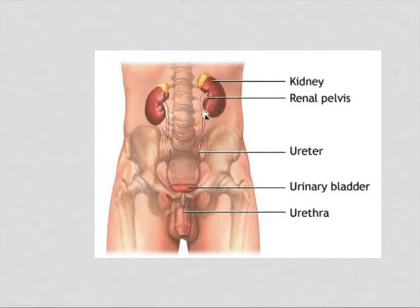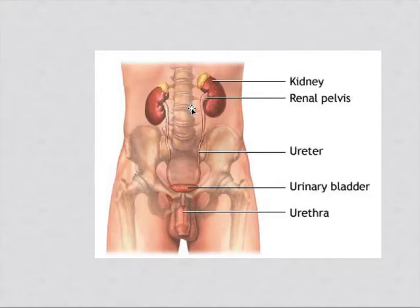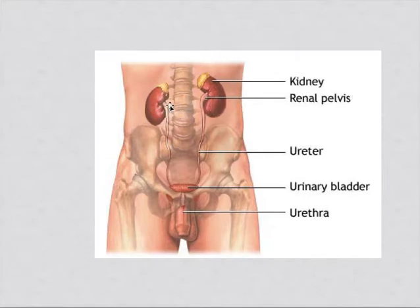The kidneys are two in number, they are retroperitoneal, and covered with the fascia called Gerota's fascia. The left kidney is very closely placed to the spleen, and on the right side there is the liver. That's why the right kidney is lower than the left kidney, as you can see in the picture.